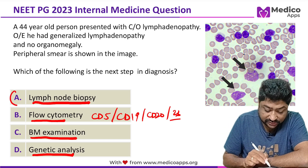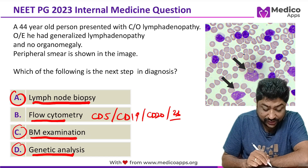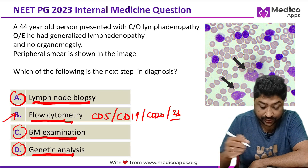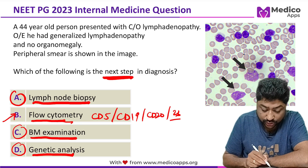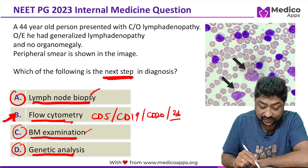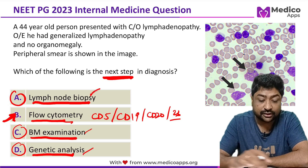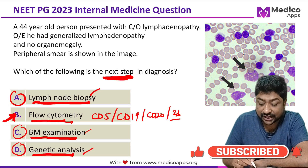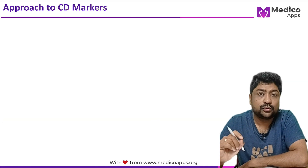All three — lymph node biopsy, bone marrow examination, and genetic analysis — are invasive procedures. The only non-invasive procedure mentioned is flow cytometry. Since the question asks about the next step in diagnosis, the correct answer is B, flow cytometry. Although findings toward CLL will be found in all the tests, you should always think in terms of which is the easier, less invasive approach. Once you have the CD markers, you can establish the diagnosis.